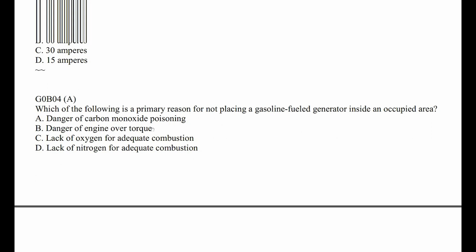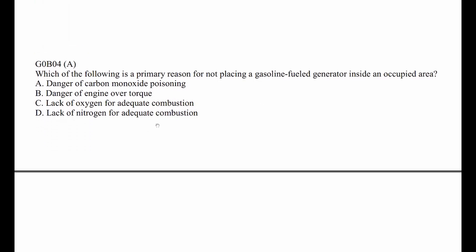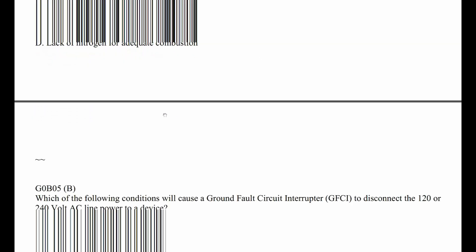G0B04: Which of the following is a primary reason for not placing a gasoline fuel generator inside an occupied area? Well, it's just plain stupid — it's carbon monoxide poisoning. I think we all know that.